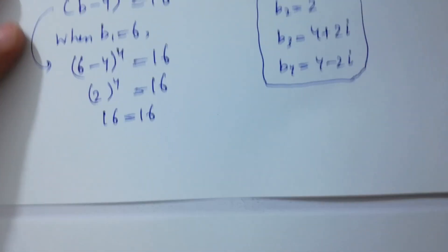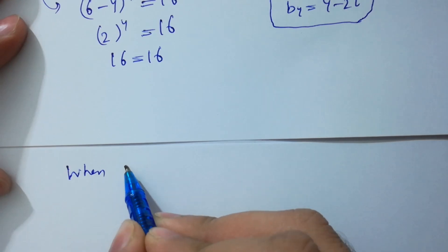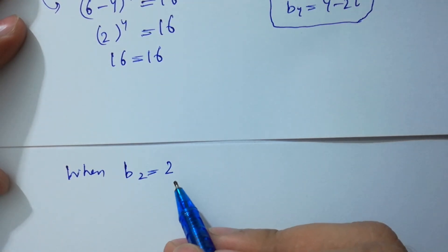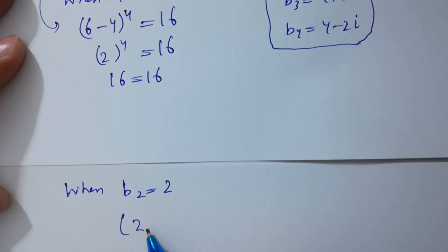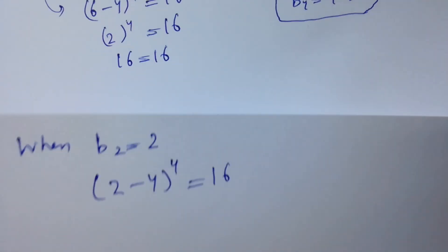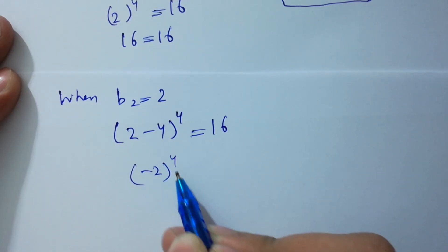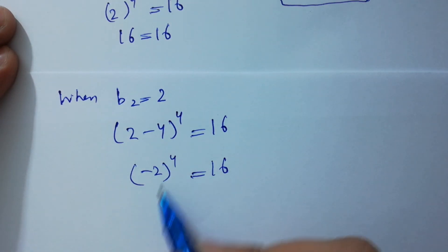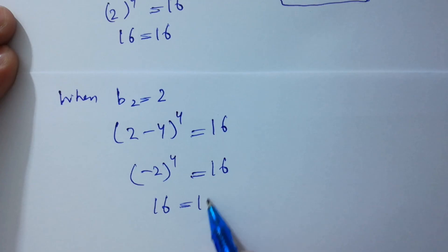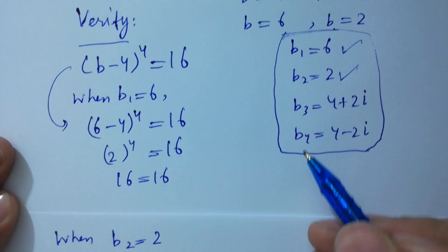Now verify when b₂ = 2. We have (2-4)⁴ = (-2)⁴ = 16. Since (-2)⁴ = 2⁴ = 16, minus times minus is plus, so 16 = 16, which satisfies the equation. b₂ = 2 is correct.